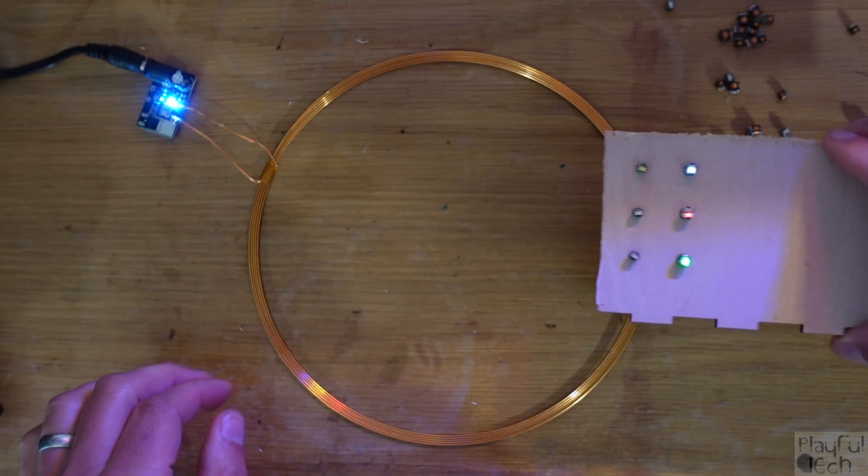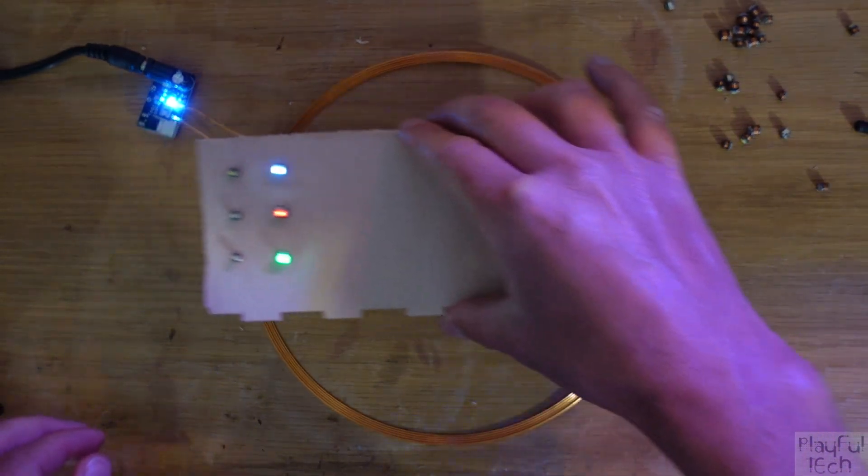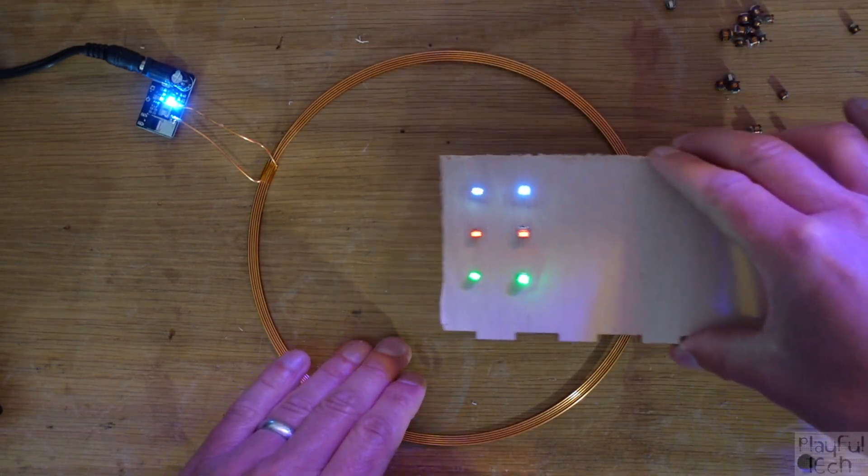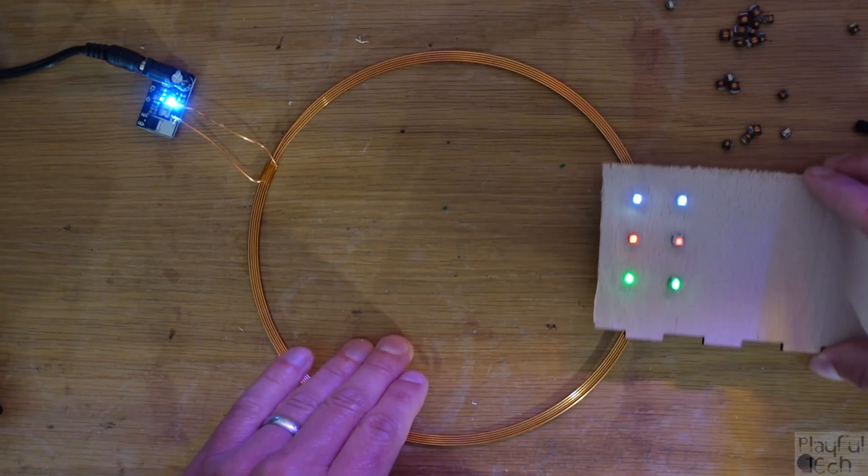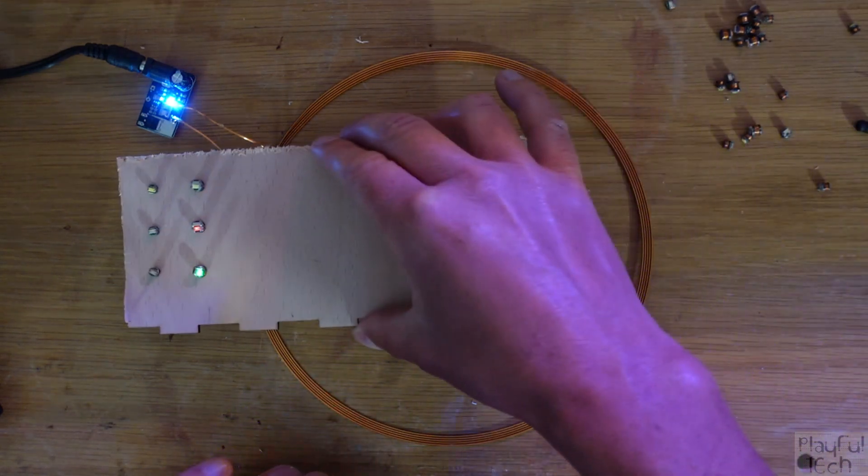You can see as I move it to the side as well, the strongest part is right in the middle of the coil. As you pass over the edges of the coil, it goes off, but then they actually do light on the outside as well.